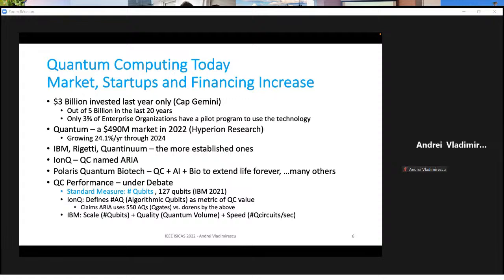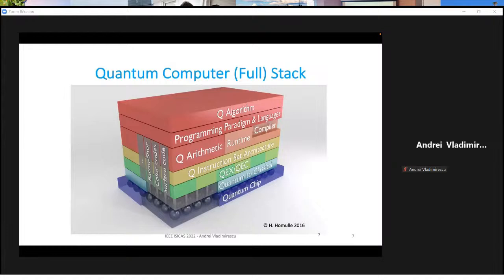IonQ, a newer company which also has a full processor called ARIA, they figured out that they call the measure the performance algorithmic qubits. That means how many qubits can they use for implementing, for running a specific algorithm. And then IBM also came with another definition. I just saw a talk a week or so ago where they combine performance as number of qubits, quantum volume (that means how many circuits, quantum circuits they can build with the qubits they have), and then a speed as quantum circuits per second.